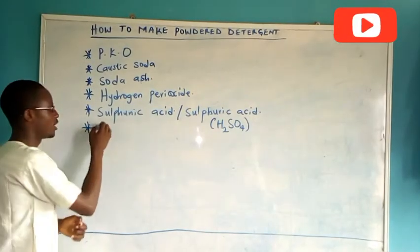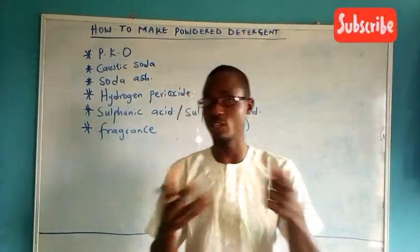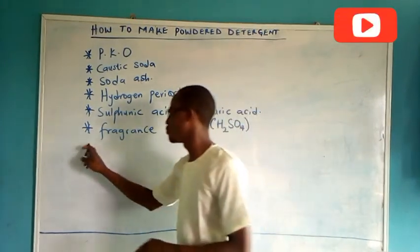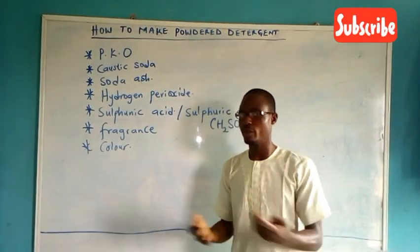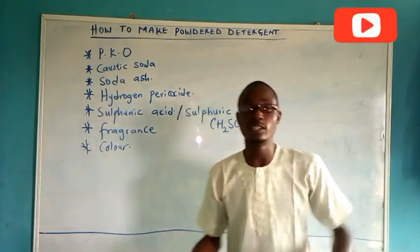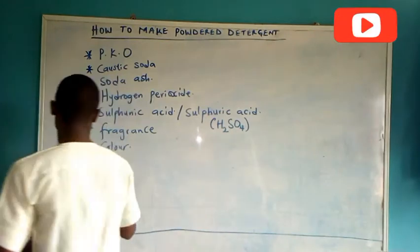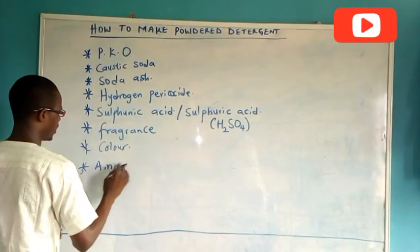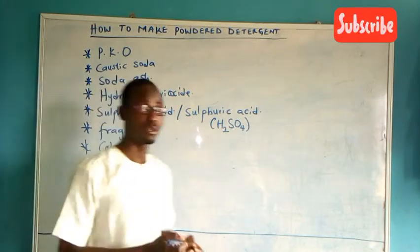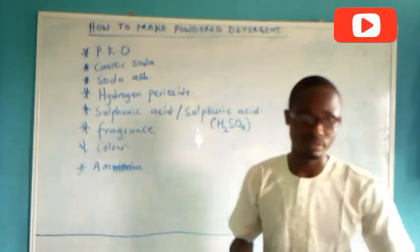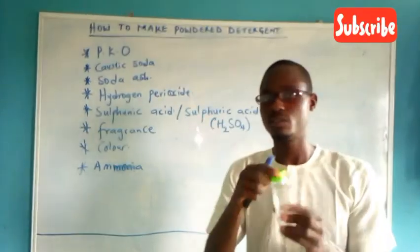We also have the fragrance. When you use other detergents you perceive some characteristic fragrance — that is the fragrance we add. Then we also have color, which is optional. Most common detergents are always in their white form. Then we also have ammonia. Ammonia is colorless but has a characteristic pungent, choking smell.